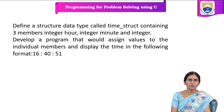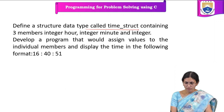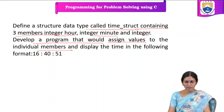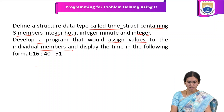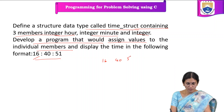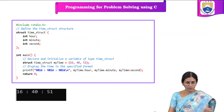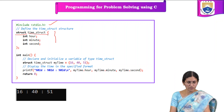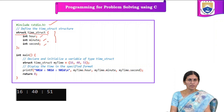The next program is to define a structured data type called time_struct containing three members: integer hour, integer minute, and integer second. We have to develop a program that assigns values to the individual members and displays the time in a specific format. Suppose we are entering 16, 40, 51 — that should display in this particular format. First, we need to include the header file, then declare the structure. Struct is the keyword, time_struct is the name, and hour, minute, and second are the integer members.